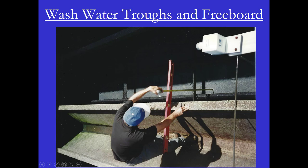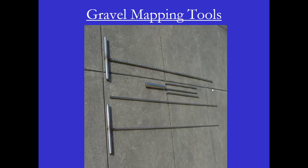The next step is to put the level in the trough and to measure from the bottom of the level, or the top of the wash water trough, down to the filter media. This gives you the freeboard. An important tool for mapping a filter is a gravel mapping tool.